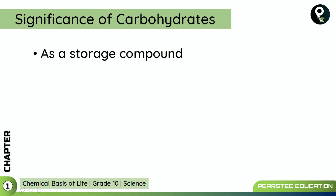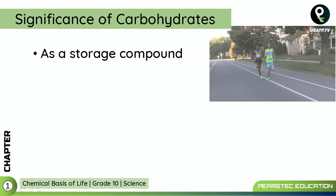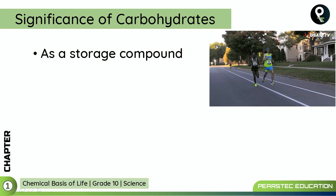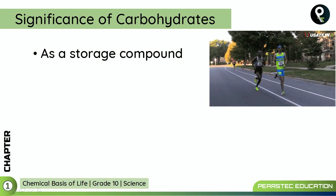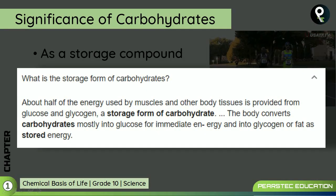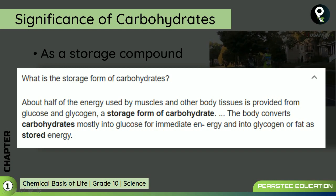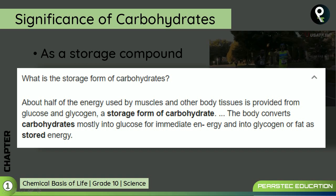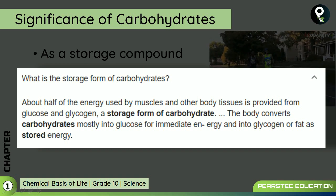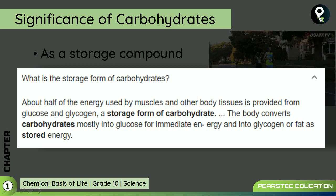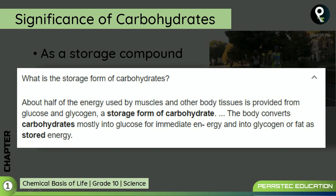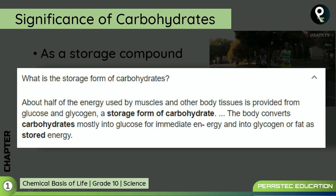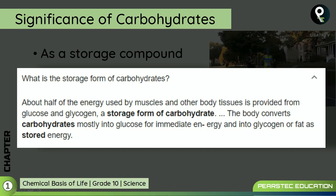As a storage compound, carbohydrate also works. Look at these people — they are running a marathon for a long time and they have to keep proper energy in their body to continually run. About half of the energy used by muscles and other body tissue is provided from glucose and glycogen. The body converts carbohydrate mostly into glucose for immediate energy and into glycogen or fat as stored energy. So if you want to run a marathon, you need enough glycogen or fat stored energy.